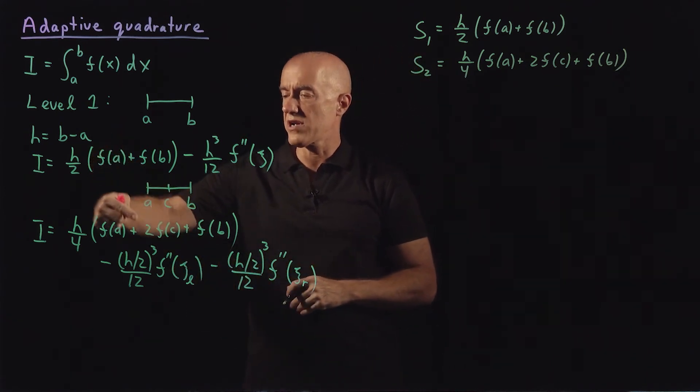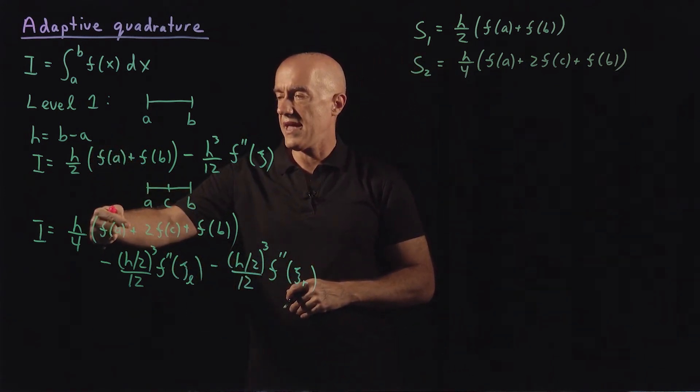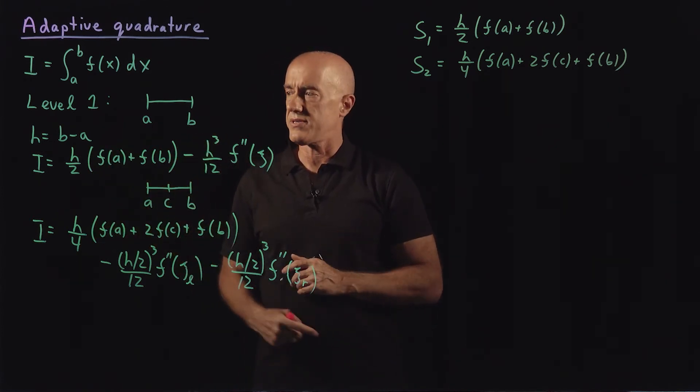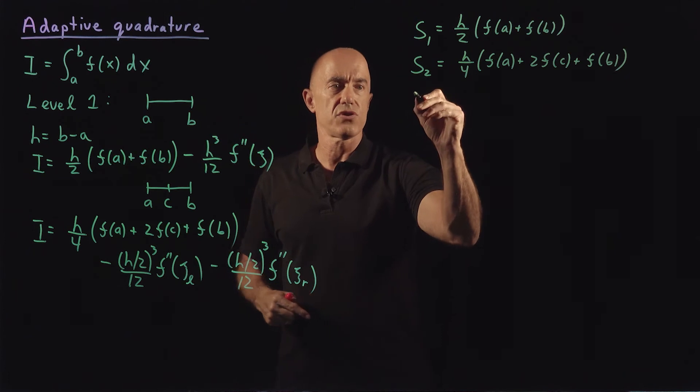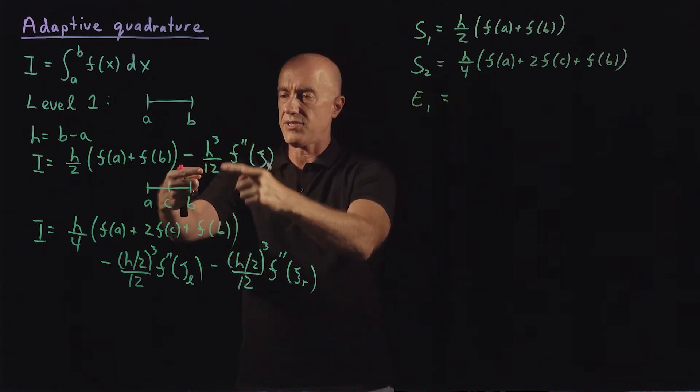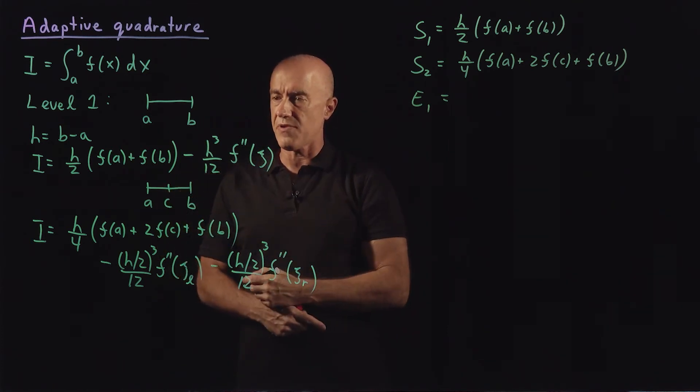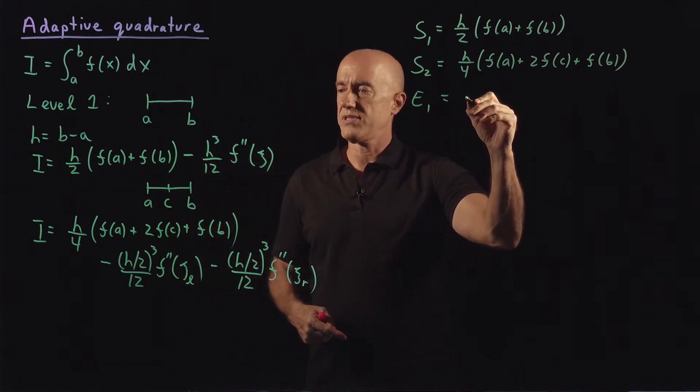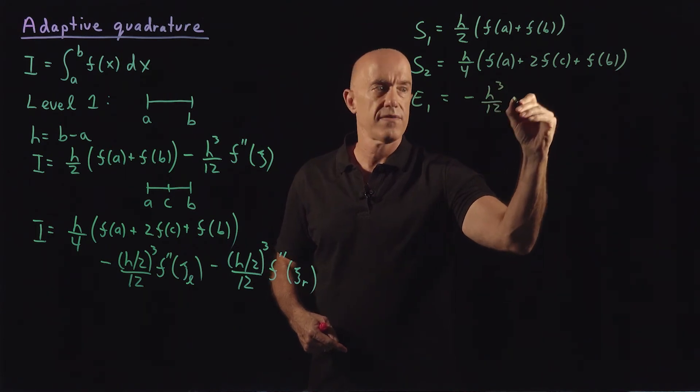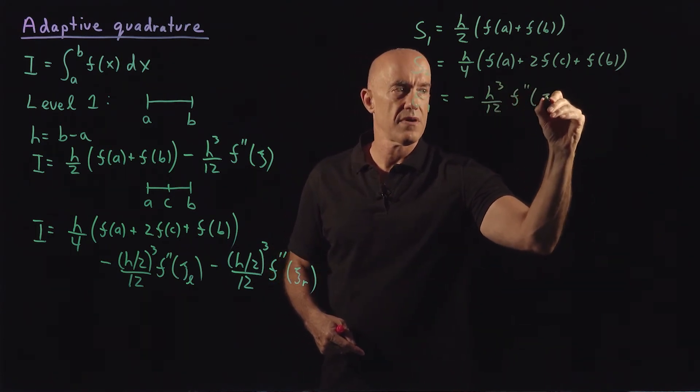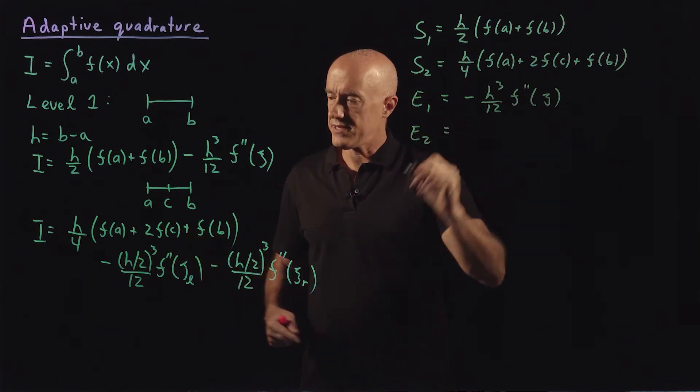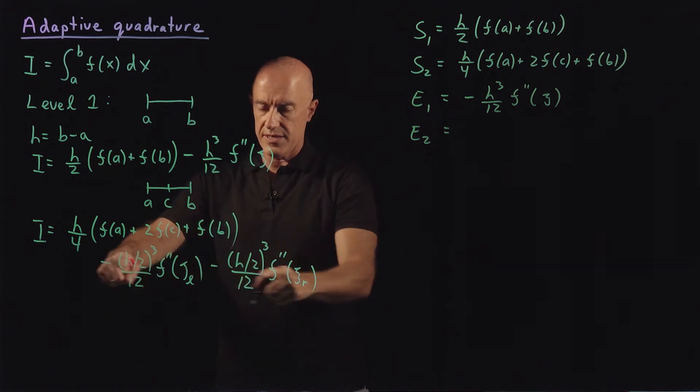Those are what we're comparing: s1 to s2, but we're also comparing the errors. So the error associated with s1 is h cubed over 12 f double prime of ξ. So we'll say that's minus h cubed over 12 times f double prime of ξ.